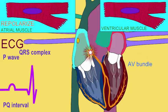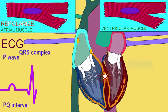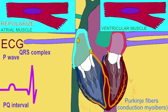During the second half of the P-Q interval, the stimulus will travel from the AV node to the AV bundle, to the right and left bundle branches, and then to the Purkinje fibers, or conduction myofibers, which spread the depolarization throughout the ventricles.